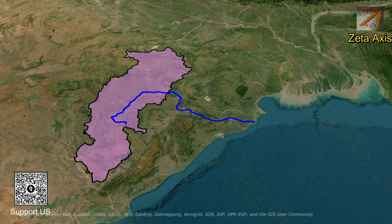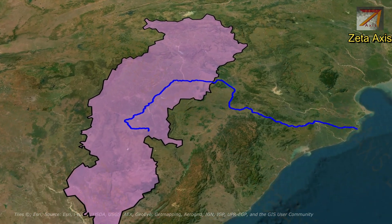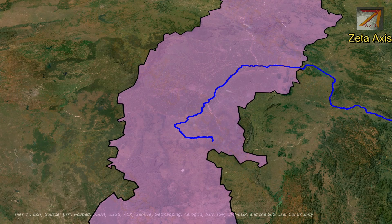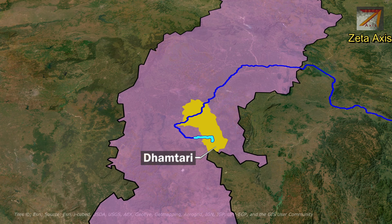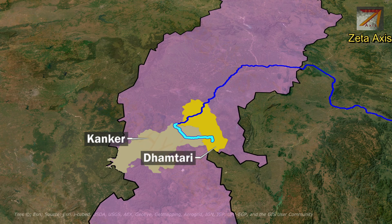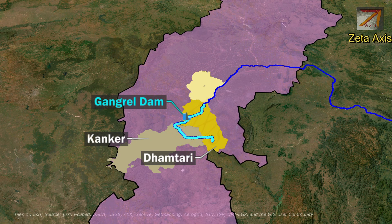Now let's discuss the course of Mahanadi River. The Mahanadi River originates from the Eastern Ghats in Dhamtari district of Chhattisgarh. After its origin, it flows into Kakir district and then flows back into Dhamtari district, where Gangrel Dam is built on the Mahanadi river. From here, the Mahanadi river flows in a northern direction, passing through Raipur and Gariyaband district.